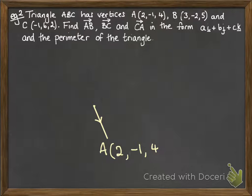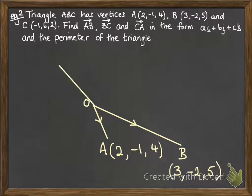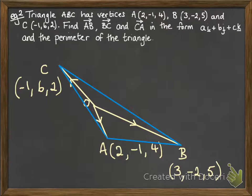So first, let's try drawing out what that looks like. So A being at 2 minus 1, 4, we can draw that position vector from the origin. Same for B and C. And we're looking at this triangle here that joins up those points ABC.